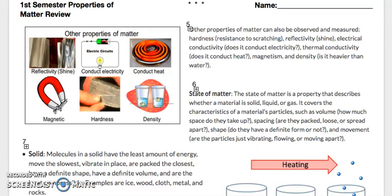State of matter. The state of matter is a property that describes whether a material is solid, liquid, or gas. It covers characteristics of materials particles, such as volume. How much space do they take up? Spacing. Are they packed loose or spread apart? Shape. Do they have a definite form or not? Movement. Are particles just vibrating, flowing, or moving apart?